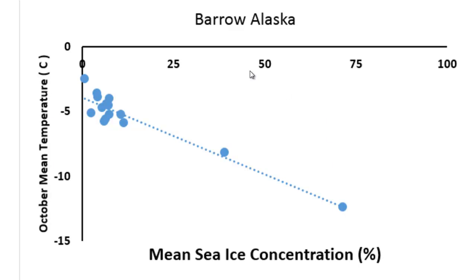Develop a scatter plot where the x-axis is your sea ice concentration and the y-axis is the October mean temperature in degrees Celsius. Email a plot that looks like this, along with a label showing the R-squared value of the trend line and the equation of the trend line.